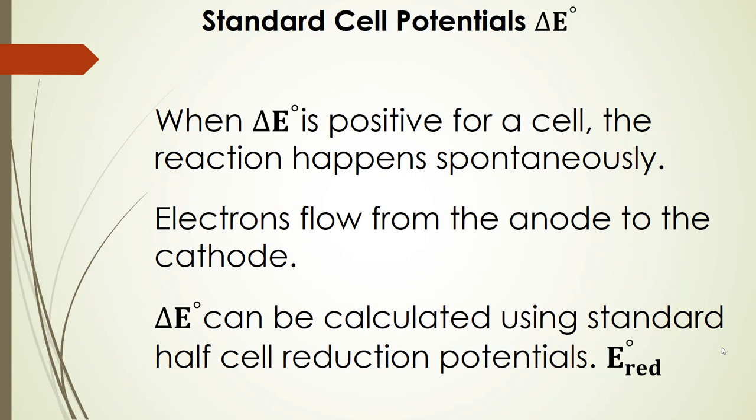When the cell potential is positive for a cell, that means that reaction happens spontaneously. A little later on, we're going to see how that relates to ΔG, and see how a positive cell potential results in a negative ΔG, which means we have a spontaneous reaction. In this spontaneous reaction, electrons flow from the anode to the cathode. This cell potential can be calculated using standard half-cell reduction potentials, or sometimes just called standard reduction potentials, represented as E°red.